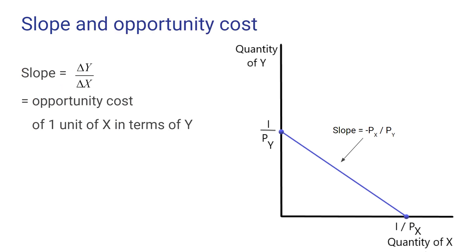But the slope also has another interesting interpretation. The slope by definition of a linear relationship is defined to be the change in Y over the change in X. But that's essentially nothing more than the opportunity cost of one unit of X in terms of foregone units of Y.